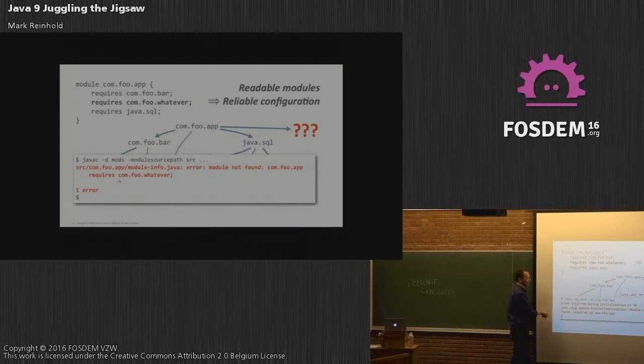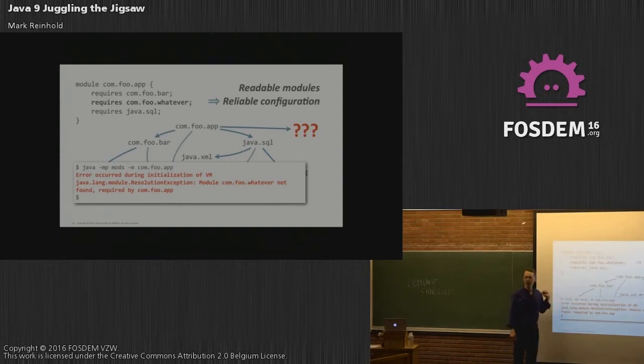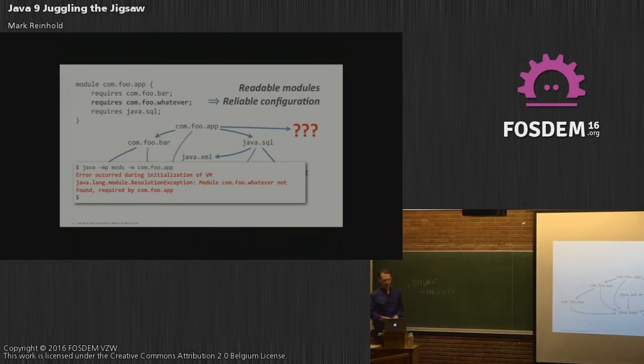The Jigsaw BUILD has a concept of module path, class path, but it's for modules. And Dash M says the main module is going to be the 1Confoo app, go find its main method. So that's a reliable configuration.